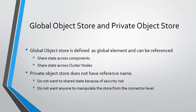There are two kinds of object store: global object store and private object store. We define a global object store as a global element and we can reference it inside components. Global object store shares state across components and can also share state across cluster nodes. Private object store does not have a reference name. They are defined for a particular component for security reasons and to prevent other components from modifying or manipulating the information inside the object store.